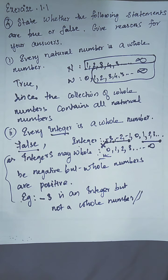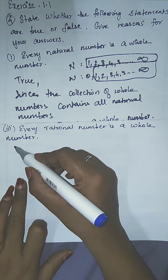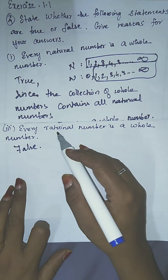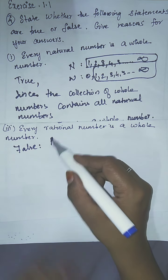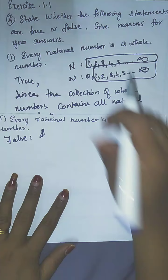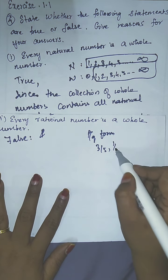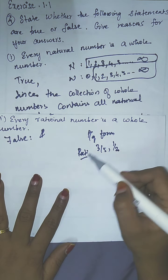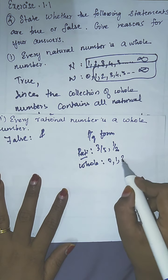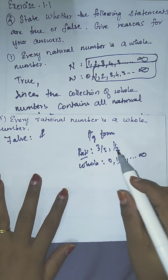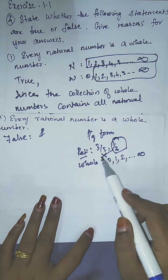The last statement is: every rational number is a whole number. The answer is false. Rational numbers are in the format of p by q — for example, 3/5 and 1/2 are rational numbers. Whole numbers are 0, 1, 2, 3 up to infinite.